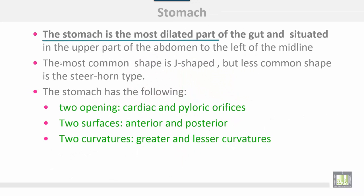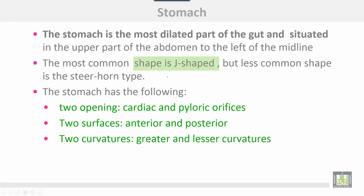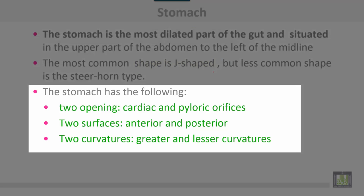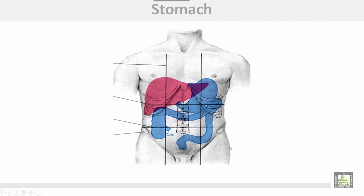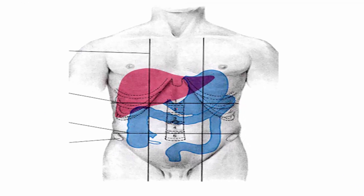The stomach lies in the most dilated part of the gut and is situated in the upper part of the abdomen to the left of the midline. The most common shape is J-shaped, but a less common shape is the steer horn type. The stomach has the following: two openings — cardiac end and pyloric end; two surfaces — anterior surface and posterior surface; two curvatures — greater and lesser.